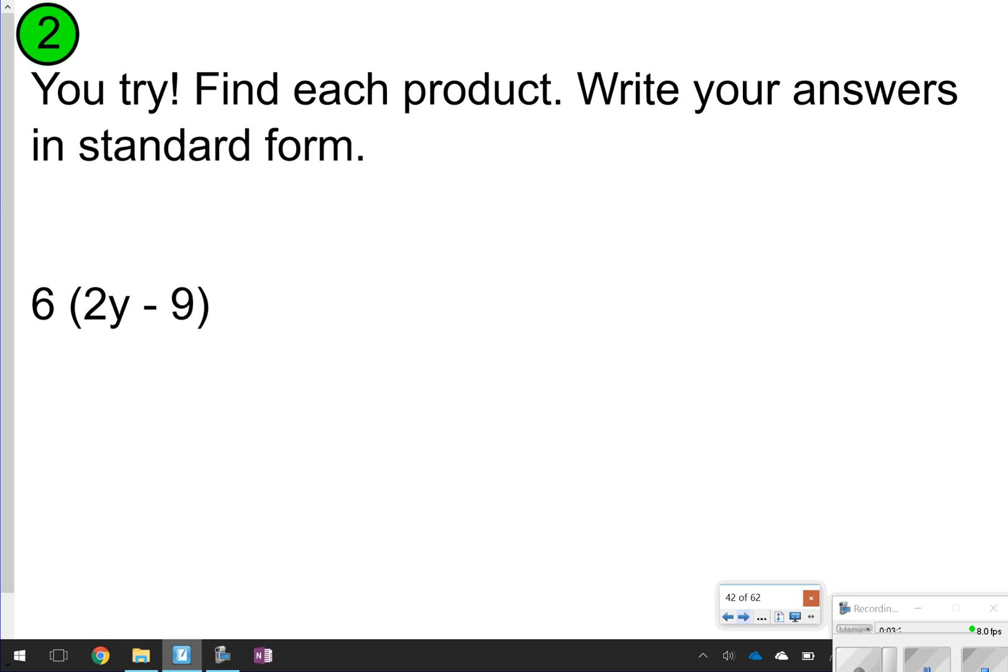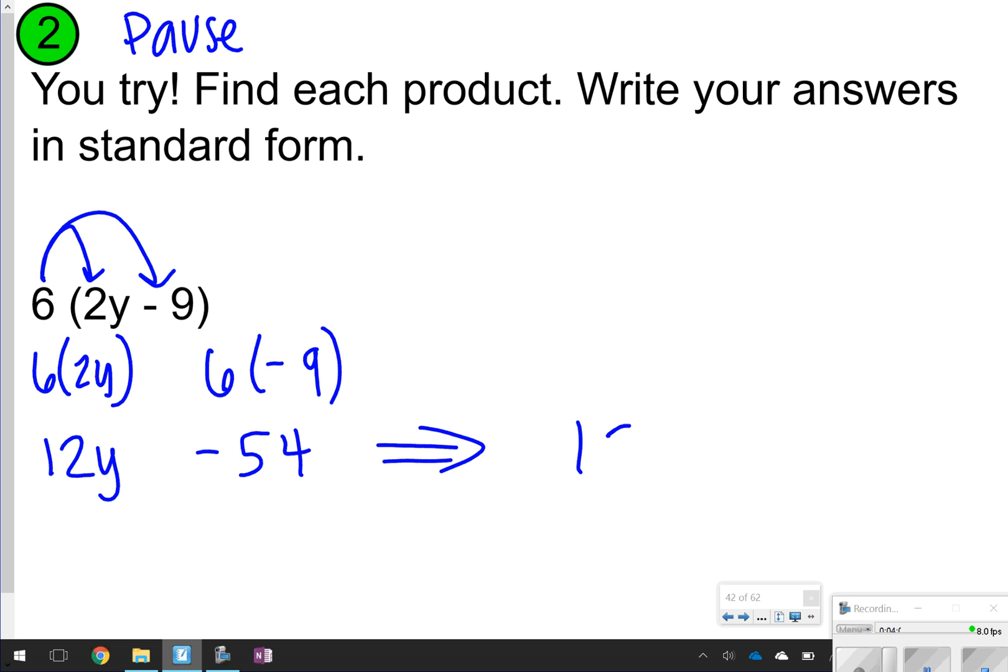The next one you're going to try and just make sure that your answer is written in standard form. So go ahead and pause the video, try distributing, and once you're done, click play. Alright, here we go. Let's see if you got your answer correct. Again, the first thing you want to do is distribute the number on the outside of the parentheses: 6 times 2Y, 6 times negative 9. 6 times 2Y is 12Y. 6 times negative 9 is negative 54. So if you put it all together, we'll have 12Y minus 54, or you can write 12Y plus negative 54. Both mean the same thing. How did you do?